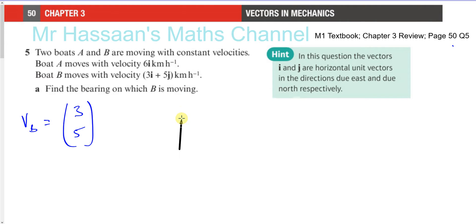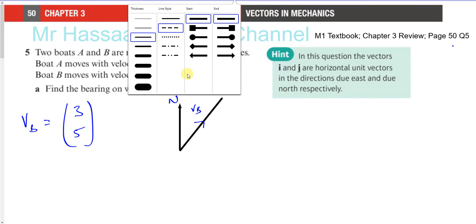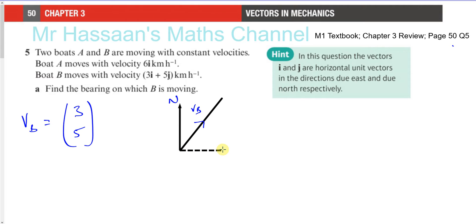Bearings are measured from the north line and in the clockwise direction. So 3i plus 5j is going 3 across and 5 up — something like this. That will be its direction. So this is the velocity of B, and this is the north line. What we have is 3 units this way and 5 units upwards — that's the vector (3, 5). The bearing would be this angle here. Let's call this theta. This is 3, and this is 5.